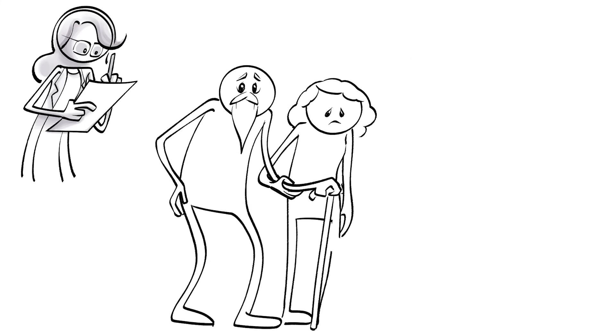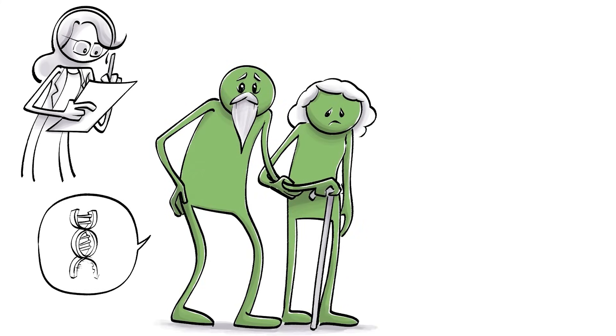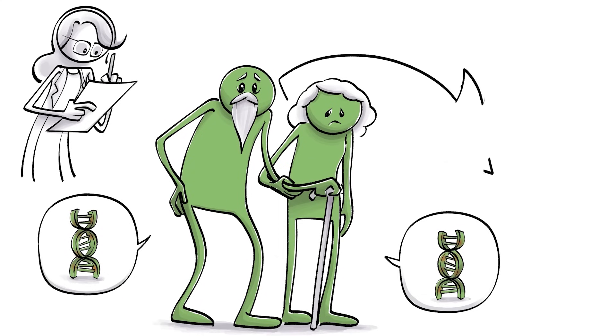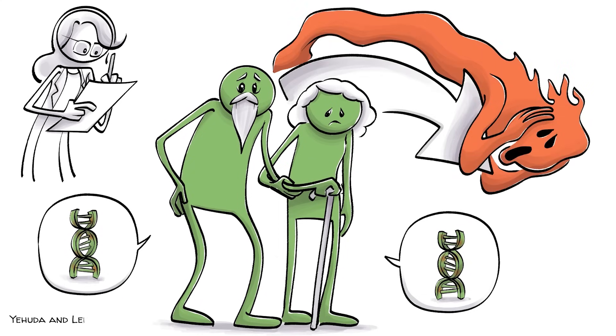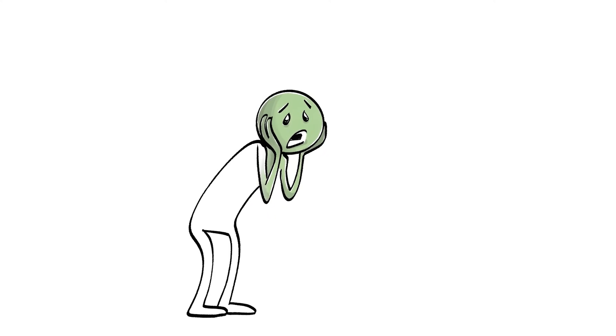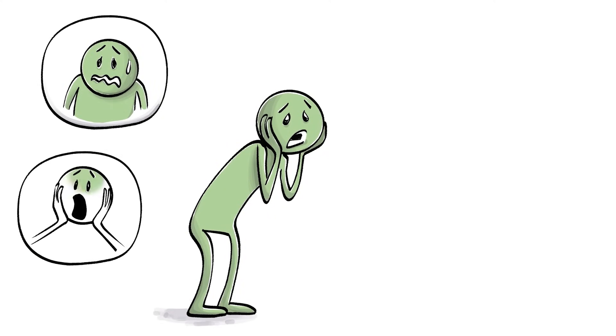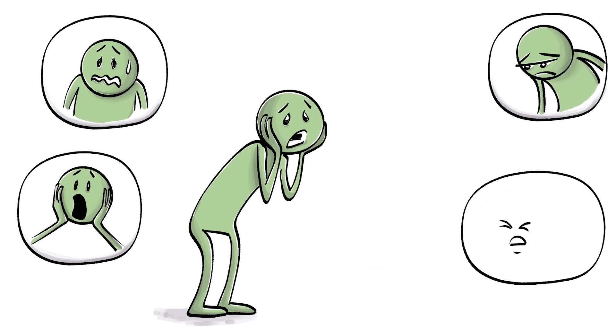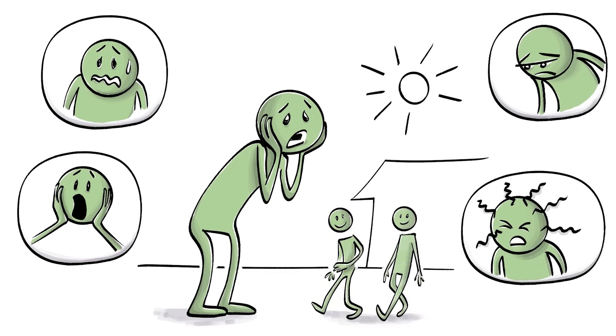In one example, researchers have found that Holocaust survivors carry epigenetic markers linked to anxiety, which can then be passed on to their offspring. Their children showed heightened sensitivity to stress and were more prone to developing anxiety, depression, and PTSD themselves, even if they didn't experience any trauma first-hand.